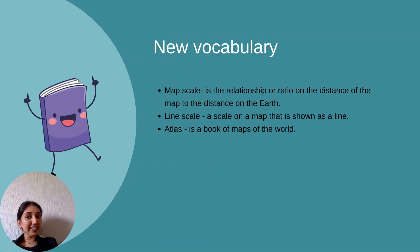New vocabulary we will be learning: Map scale is the relationship or ratio of the distance on the map to the distance on the Earth. Line scale - a scale on a map that is shown as a line.